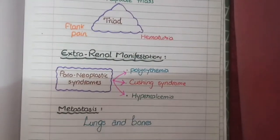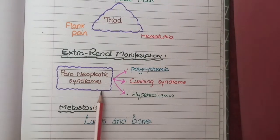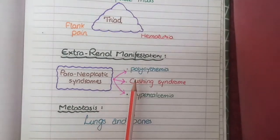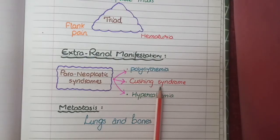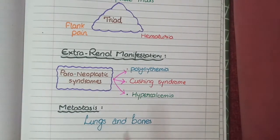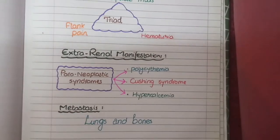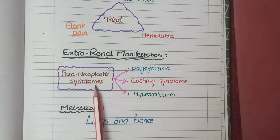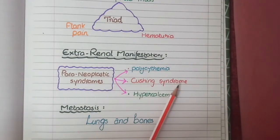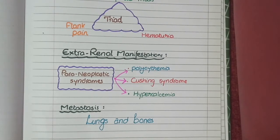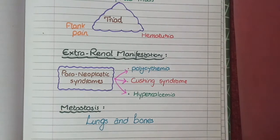The extra-renal manifestations are in the form of paraneoplastic syndromes. These include polycythemia, caused by secretion of erythropoietin by tumor cells; Cushing syndrome, caused by secretion of ACTH-like substances; and hypercalcemia, caused by secretion of parathyroid hormone-related protein by the tumor cells. The common sites of metastasis in renal cell carcinomas are the lungs and bones.